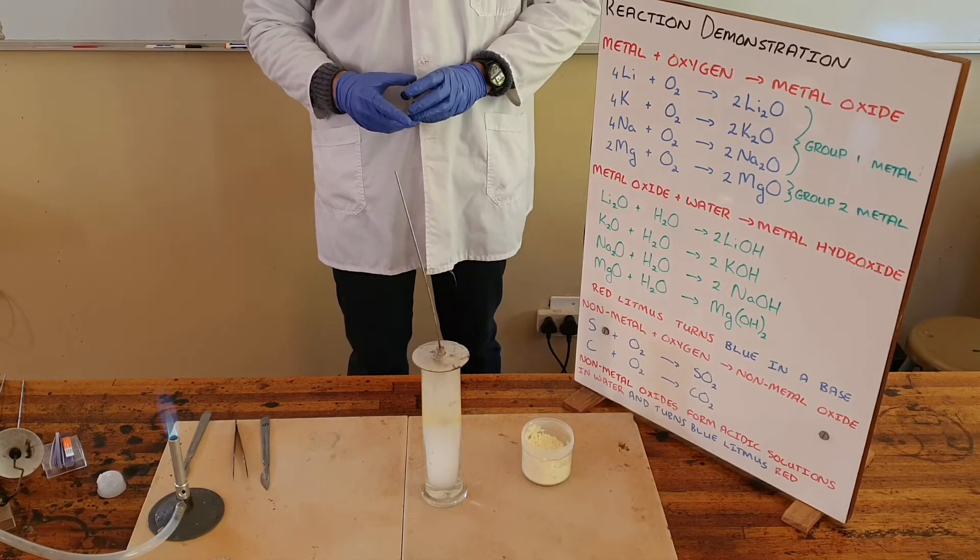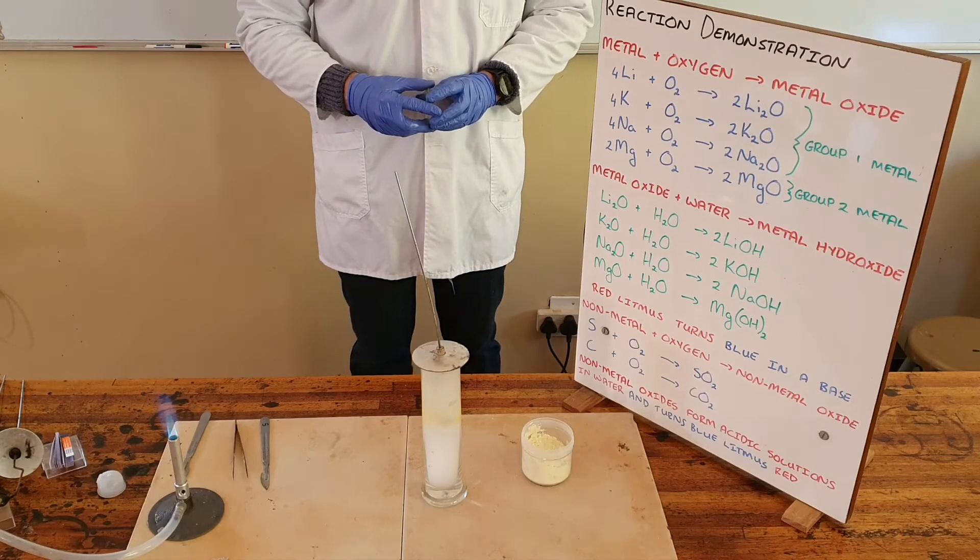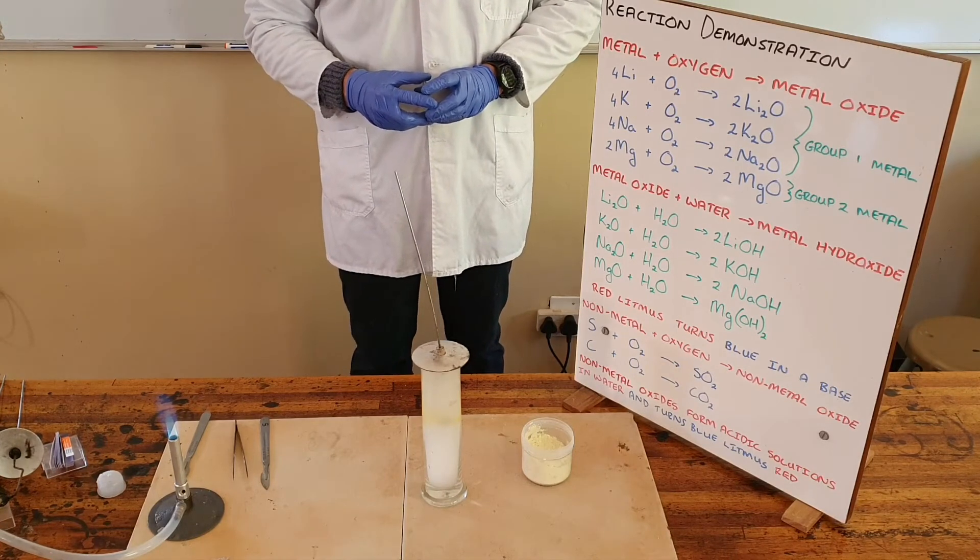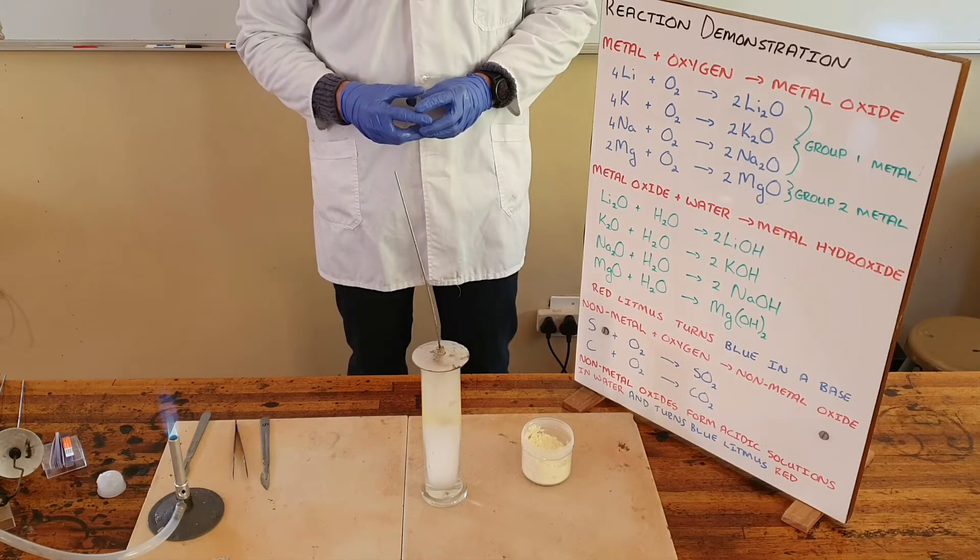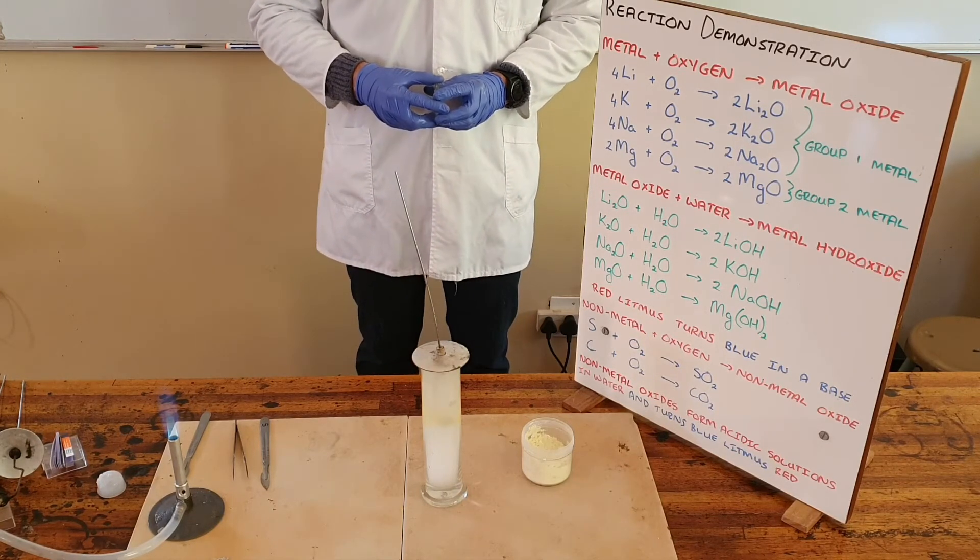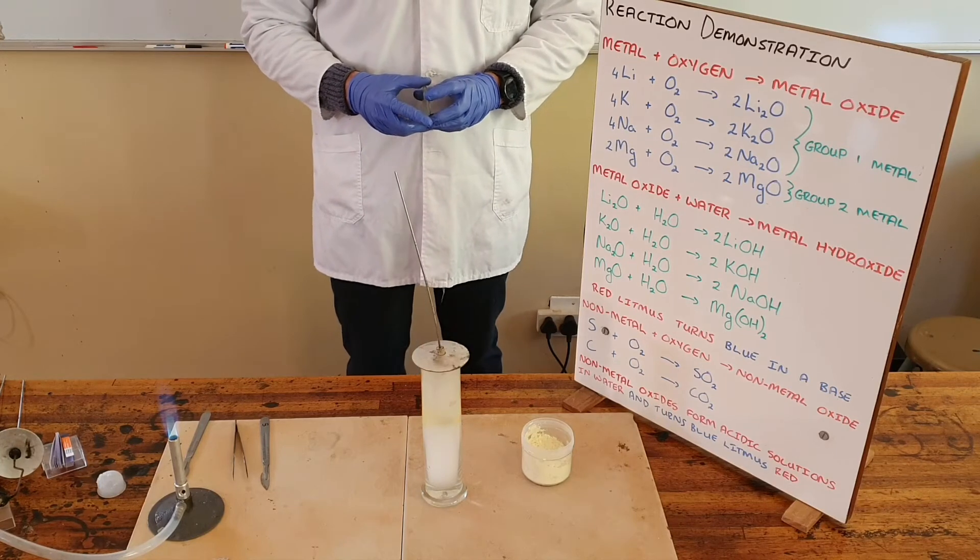We also know that when non-metal oxides combine with water they react to form an acidic solution. The acidic solution that's formed here is sulfur dioxide reacting with water to form sulfuric acid, which is a similar process to what produces acid rain.